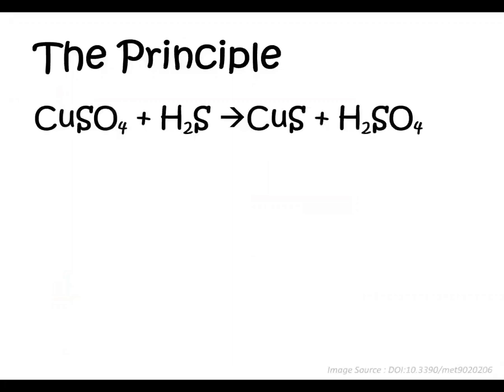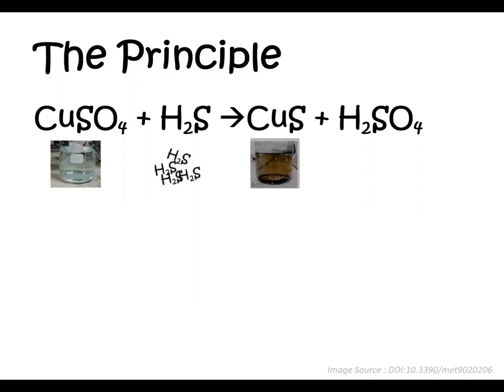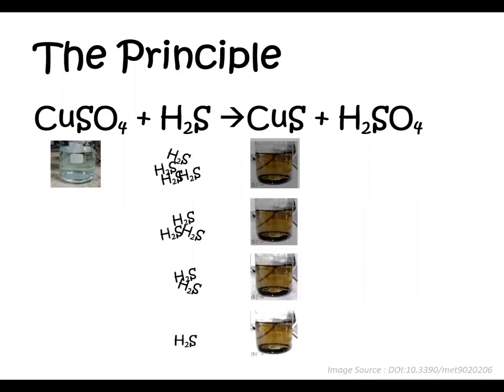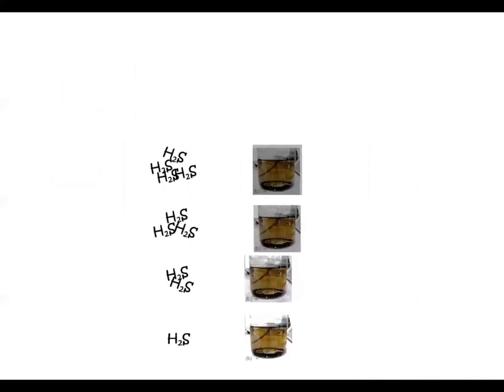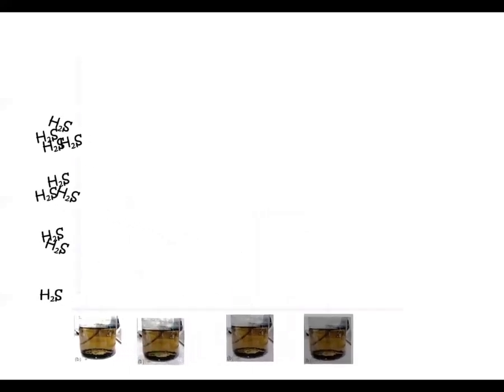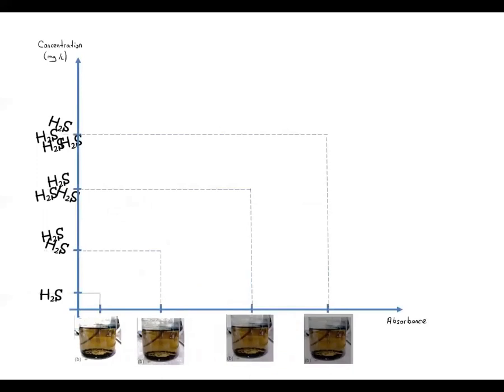According to this method, copper sulfate reacts with hydrogen sulfide and forms copper sulfide and sulfuric acid. While copper sulfate solution is light blue, the copper sulfide in water is brown in color. This color is related with the hydrogen sulfide concentration, and when there is less concentration of hydrogen sulfide, the color is lighter. The method says that there is a correlation between sulfur concentration and color formed.